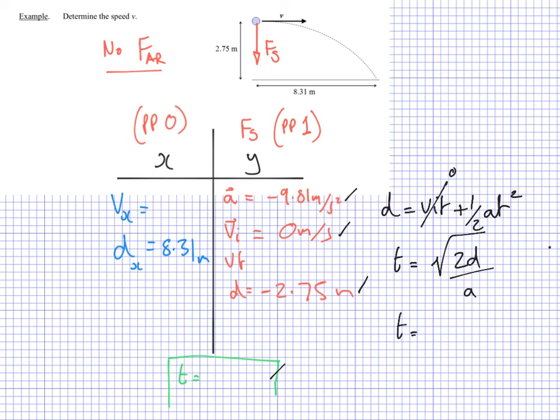That's going to give me a time in my calculator of 0.7487. I'm going to keep all those digits in my calculator. Then I'm going to bring that over here, put that into here, 0.7487 seconds. This means I can use it over here in my x coordinate, which is physics principle zero, which is uniform motion. So I'm using the formula v equals d over t. And that very simply gives me a value for the velocity, which ends up being 11.1 meters per second. That is the initial speed of this object.